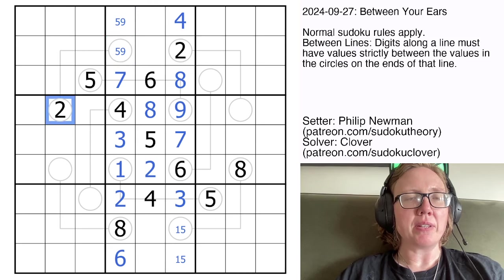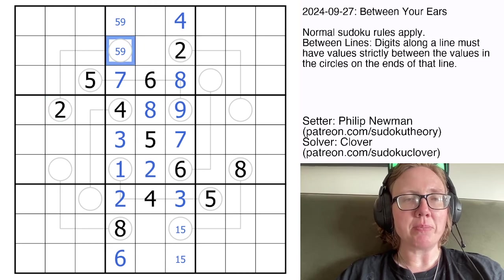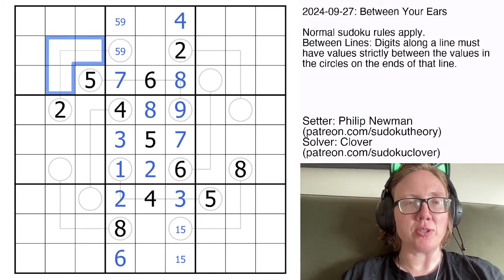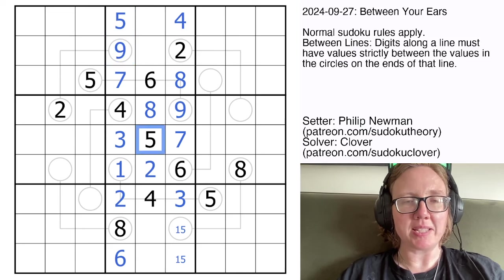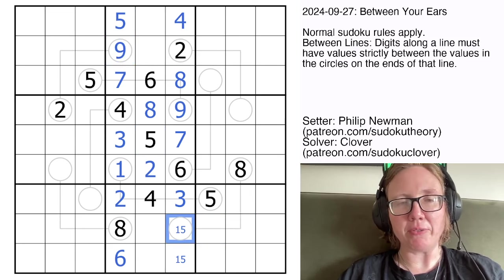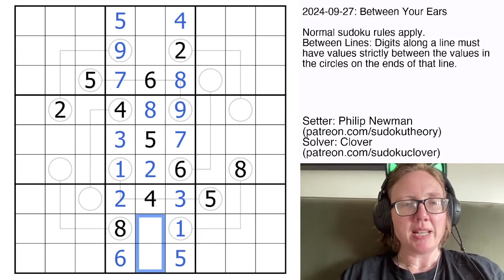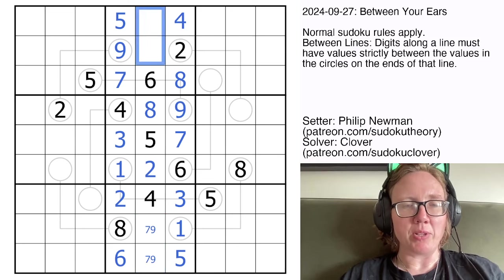Now this actually can't be a 5 on the other end of this line, because then we could only place 3 and 4 on this line, and we need to place three different digits there, not just 2. So that will have to be a 9. And something similar is happening here. If this was a 5, we'd only get a 6 and 7 in these cells. That is impossible, so this is going to be a 1. These will be 7 and 9. These will be 1 and 3.